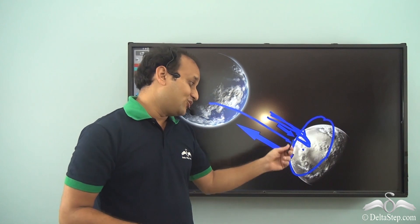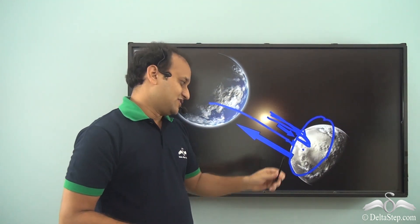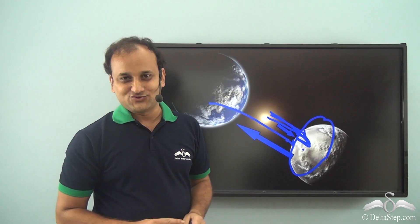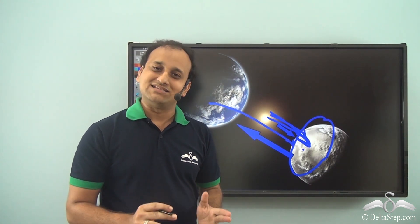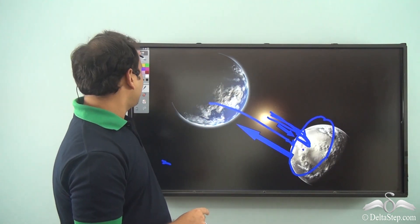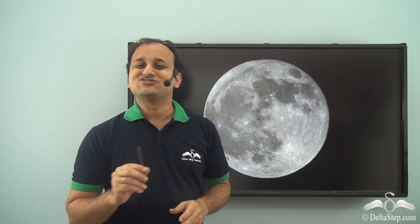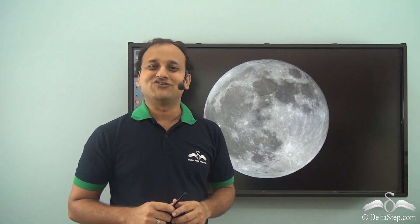Although the Moon shines pretty brightly in the night sky, it has no light of its own — it just uses the Sun's light. Today we learned that the Moon is much smaller than Earth, and although it shines brightly in the night sky, it has no light of its own. But it is a true companion of Earth, always revolving around it.